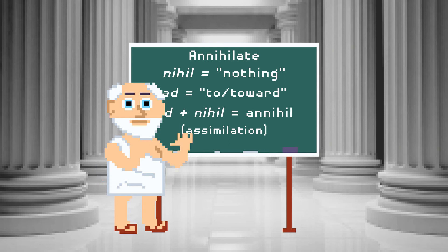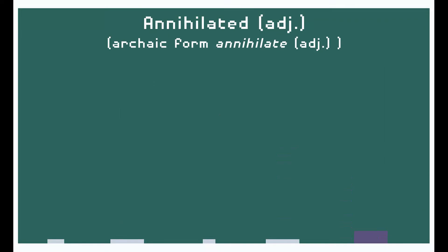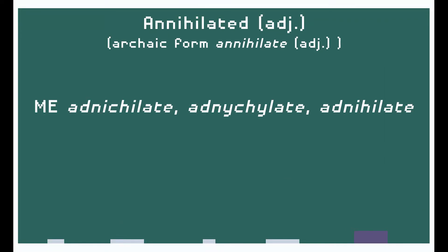The word first came into English in its past participle form — that is to say, as the adjective annihilated — in forms that would appear all the way back in Middle English, just like destroy and demolish. The verb form annihilate followed shortly thereafter, maybe about a century later.